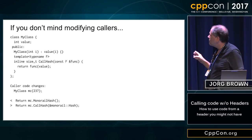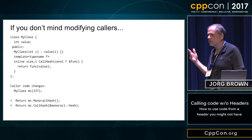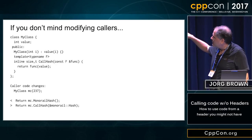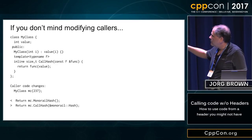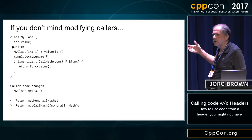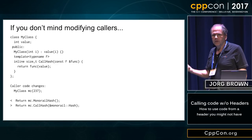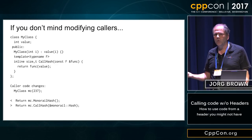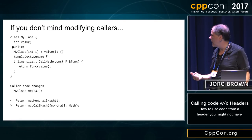So if you don't mind modifying callers, you can do this what I think is the right way, which is you make a function called call_hash and you make it much more generic. Then anybody that used to call your class's monorail_hash now calls the generic version call_hash with a pointer to monorail_hash. But number one it's ugly, and number two — which actually happened in my case — that might involve changing a lot of callers, which can be problematic.